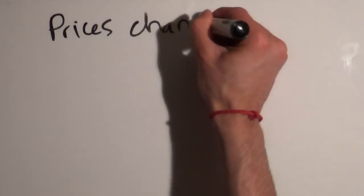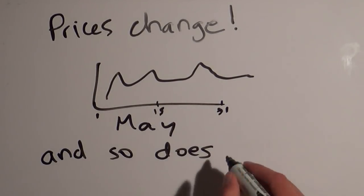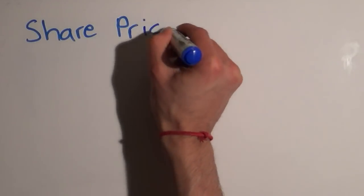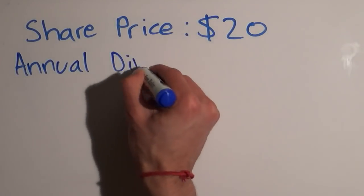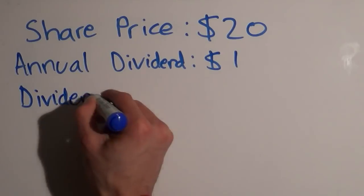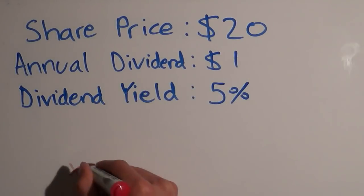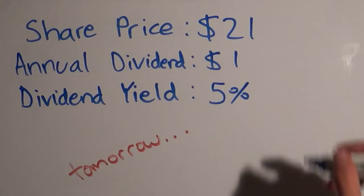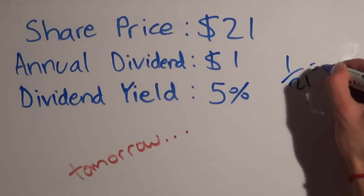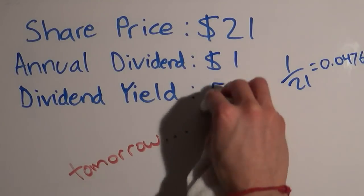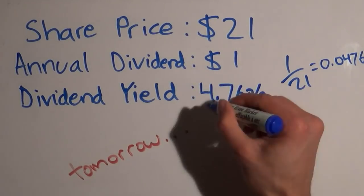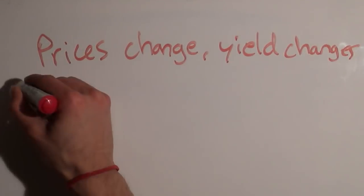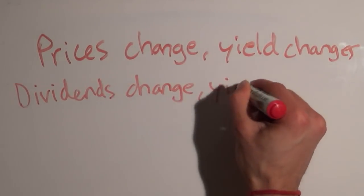Remember, stock prices change every day, so that means dividend yield will also change every day. If it's twenty dollars to buy a share that has an annual dividend of one dollar, it has a yield of five percent. If tomorrow the price of that same share goes up to twenty-one dollars, then we divide one by twenty-one to get a yield of four point seven six percent. So as prices change, so does the yield. As dividends change, so does the yield.